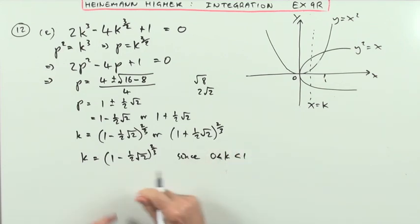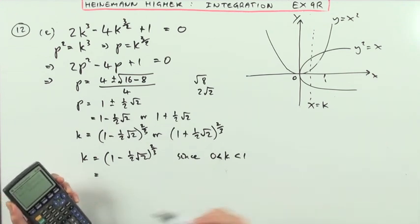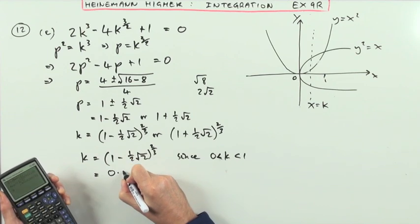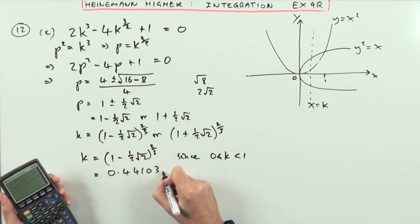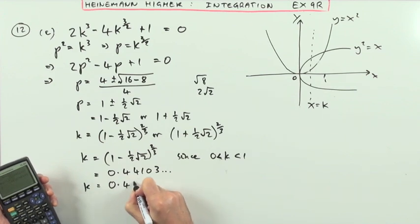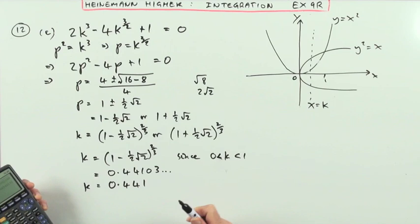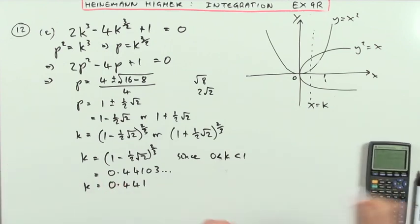And it's just a case of, no, that's the exact value of it. If you want a decimal approximation, you can use your calculator. And that gives you 0.44103 and so on. So we'll just take it to a couple of decimal places. k is equal to 0.441 to 3 significant figures.